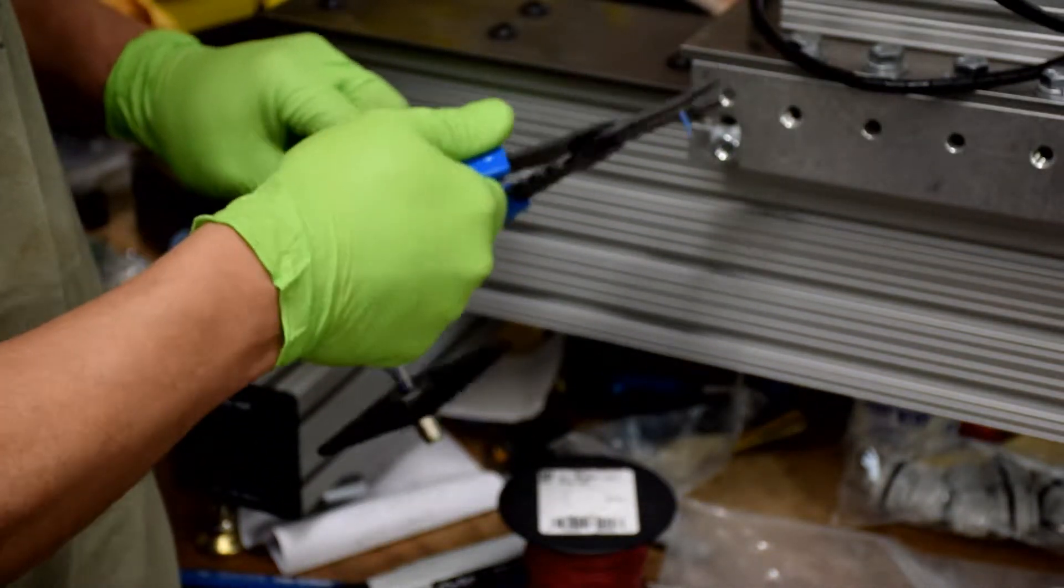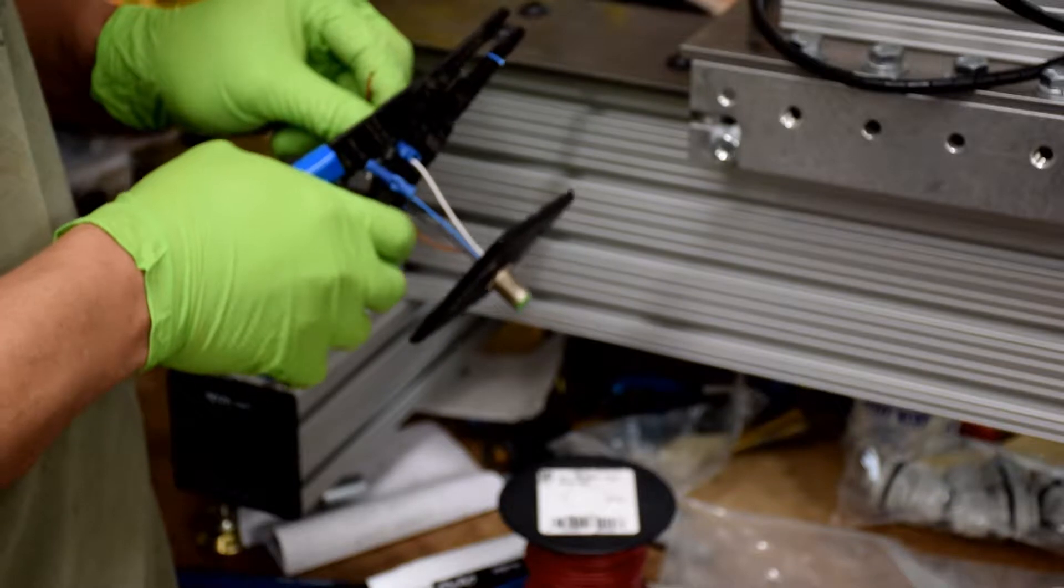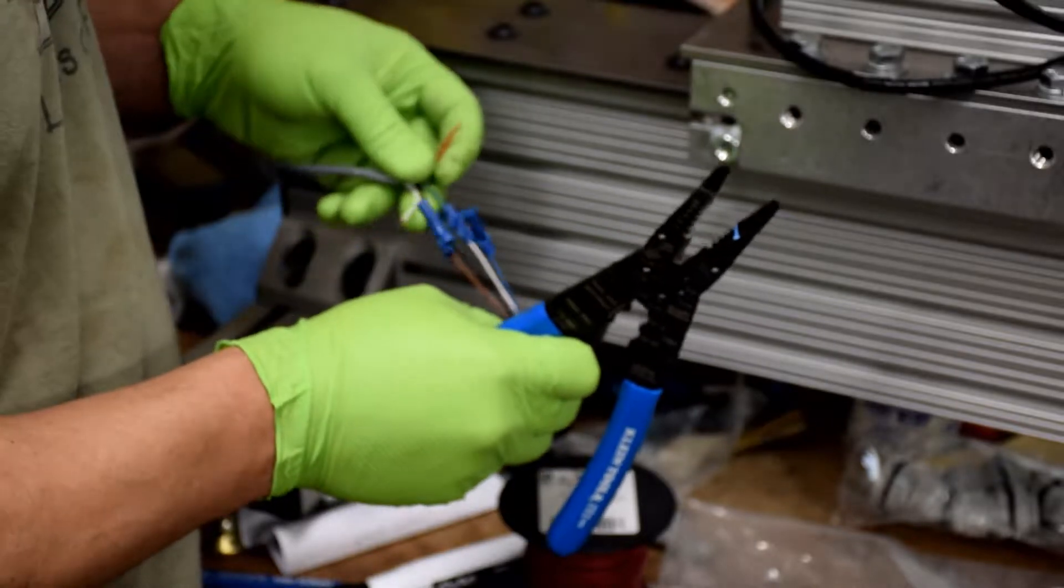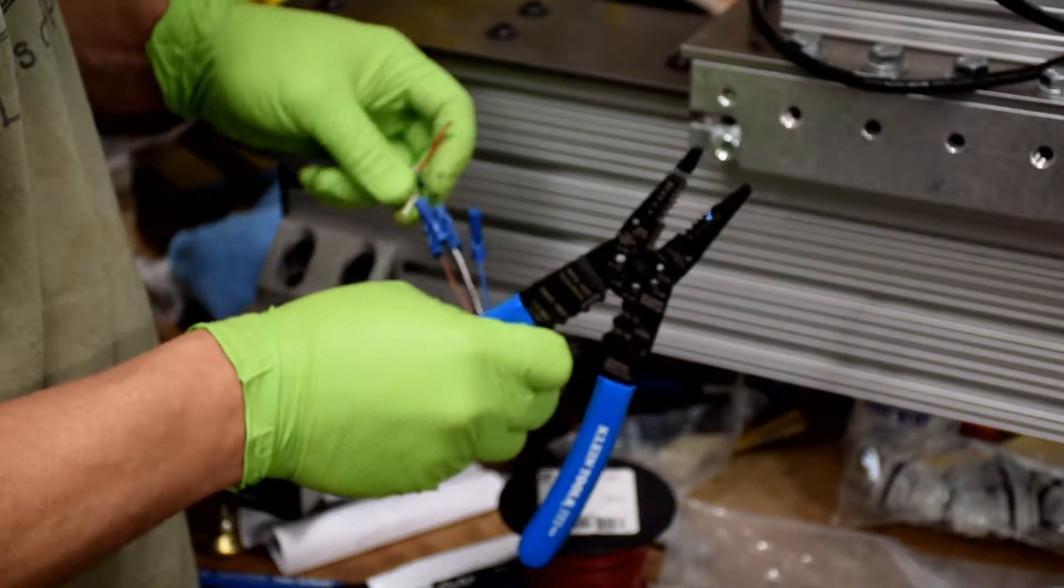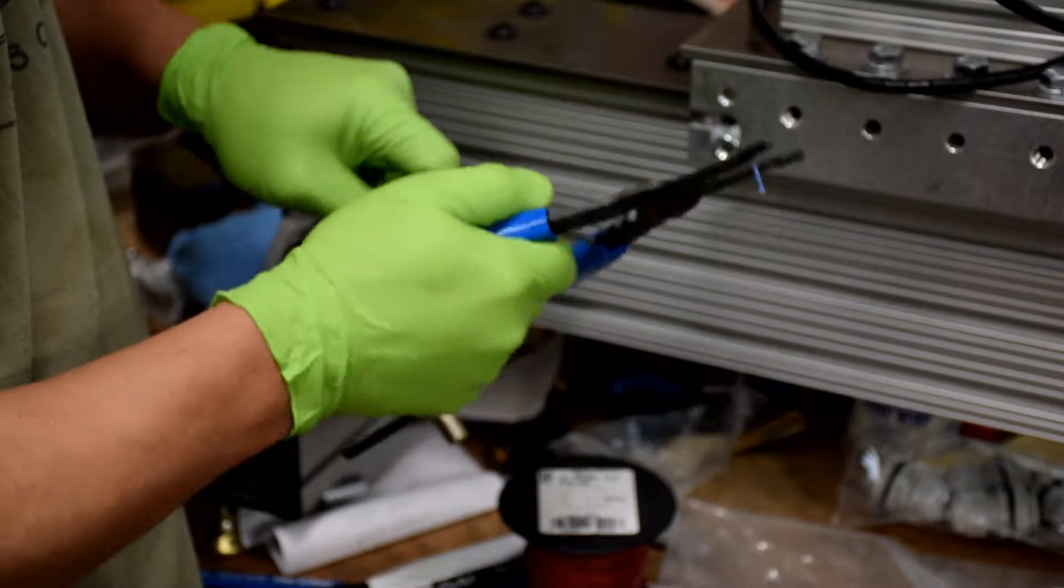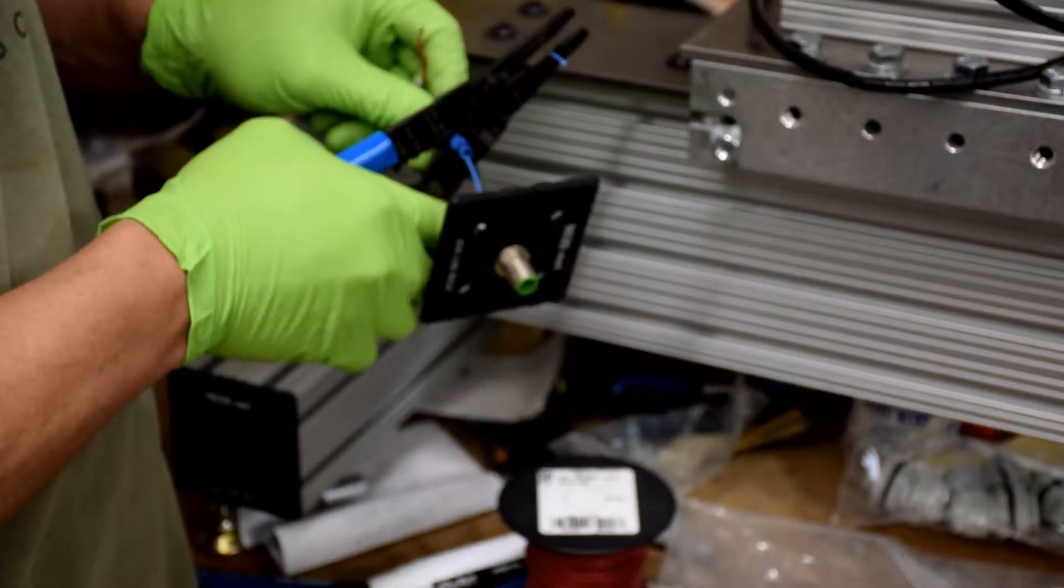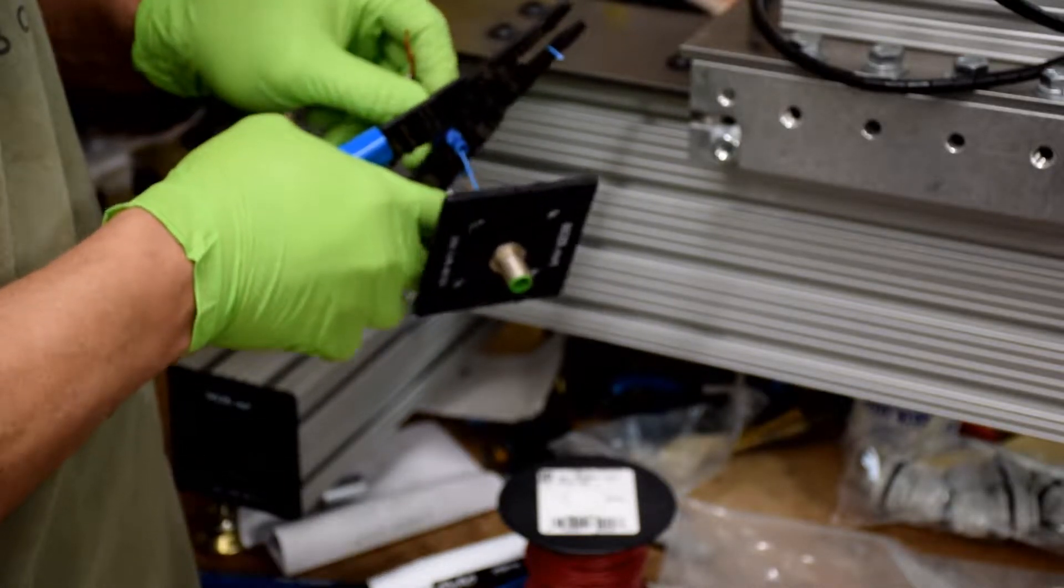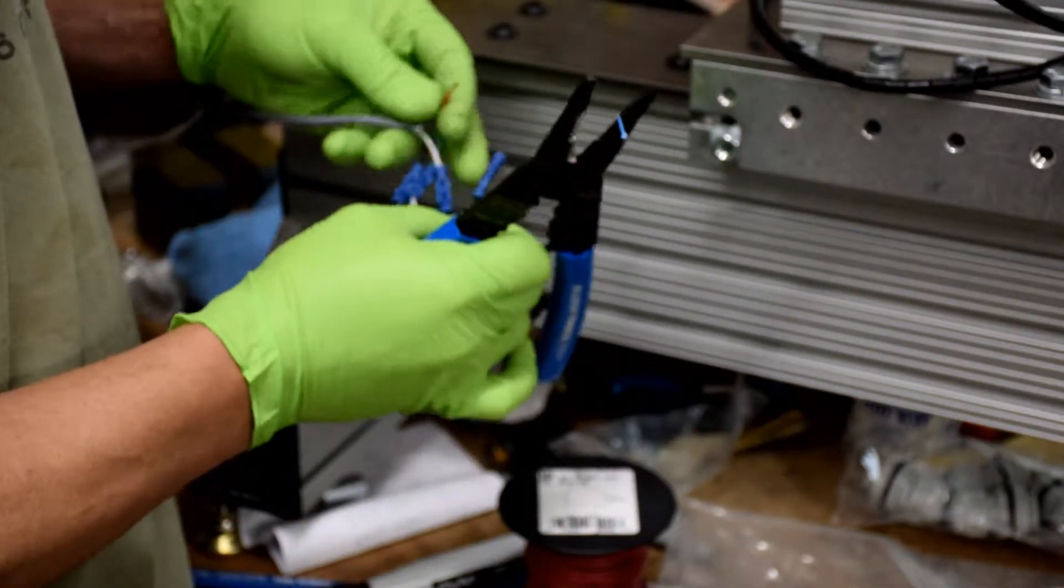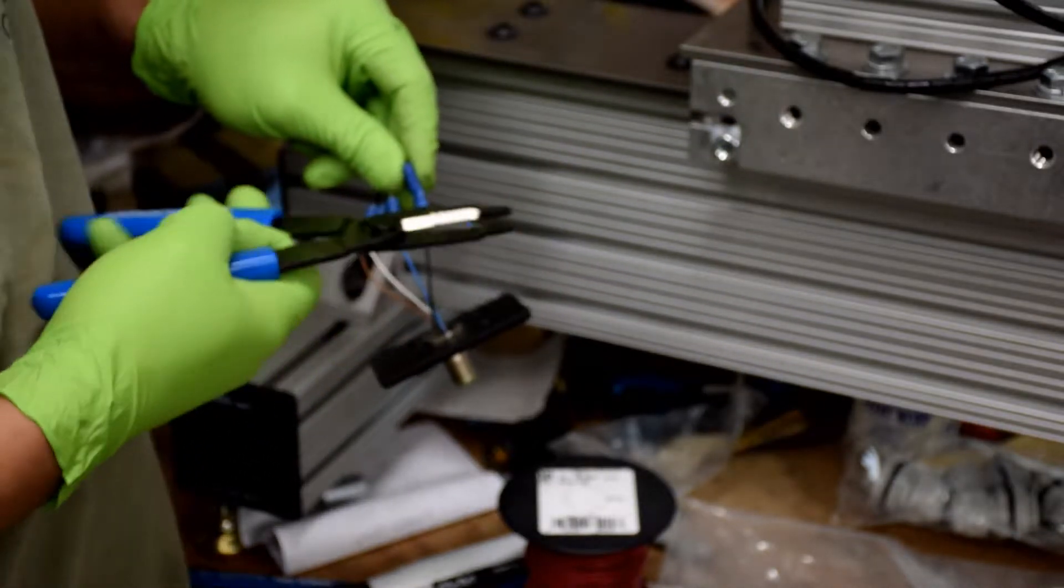The white wire from the bulkhead connector is going to go to the green wire. The blue wire from the bulkhead connector is going to go to the white wire. And lastly, the black wire from the bulkhead connector is going to go to the red wire that's passing through the lathe.